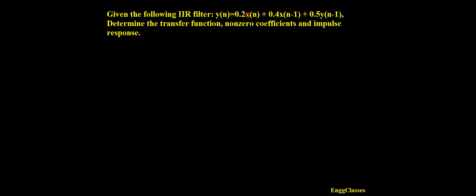Hello everyone! Welcome to NG Classes YouTube channel for a video lecture series in digital signal processing. In this video lecture we have a numerical: given the following IIR filter y(n) = 0.2·x(n) + 0.4·x(n-1) + 0.5·y(n-1), determine the transfer function, non-zero coefficients, and the impulse response. Let us begin with the solution.